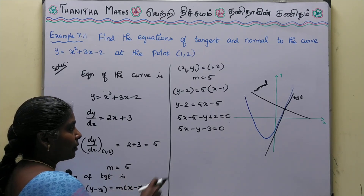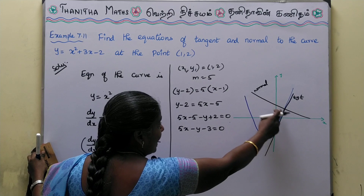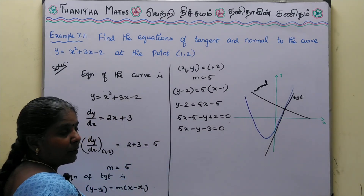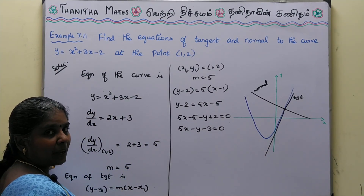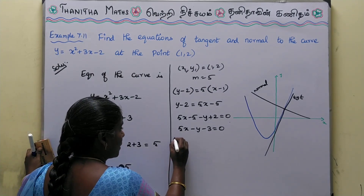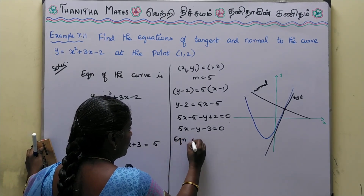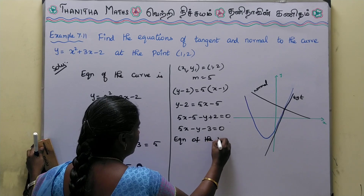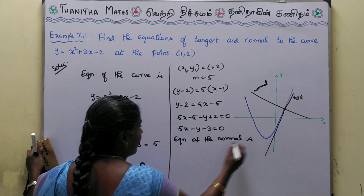The normal is the perpendicular line to the tangent. We learned about perpendicular line equations in 10th standard. The equation of the normal can be derived using the perpendicular slope -1/m.